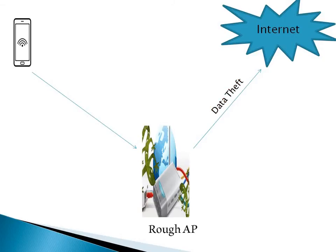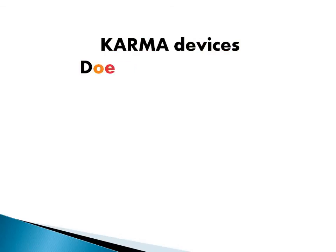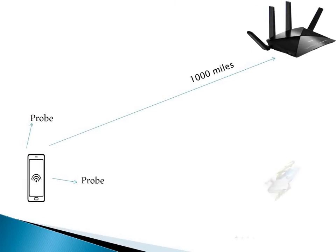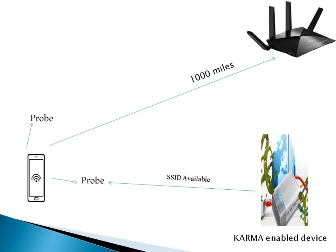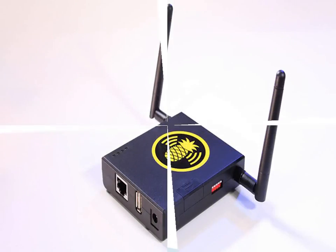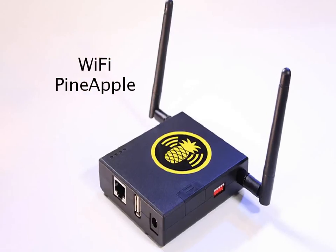It doesn't matter how far the Pawnshop wifi is from your device. Unlike regular routers, a Karma device doesn't emit beacon frames. But when it listens to a probe request for a specific SSID, it generates the wifi for that SSID to deceive the client. A client sees the SSID is available and tries to connect. You can write your own script for making your own Karma-enabled device, or there is hardware available named Wi-Fi Pineapple for performing these types of attacks.